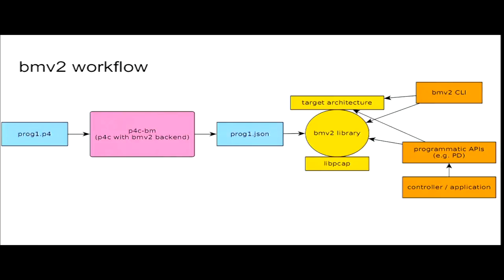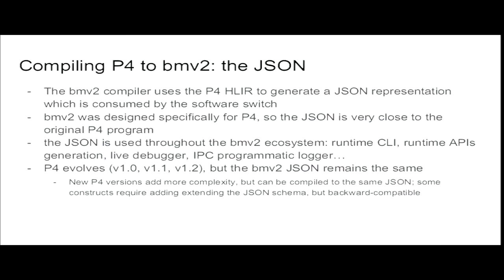The workflow: you start with a P4 program, it goes through the P4C BM compiler — the backend compiler for P4 you're hearing about today. We get a JSON program, which is kind of the assembly equivalent for P4 and BMV2. Then you have your switch — a user-space switch that reads packets from interfaces — and on top of that, the runtime APIs and your application.